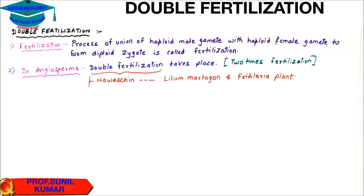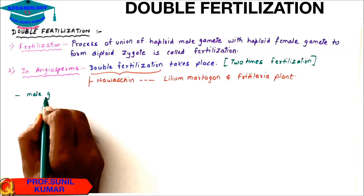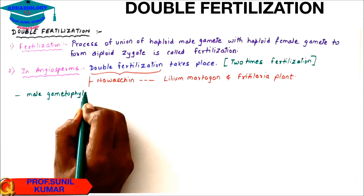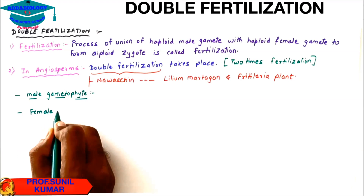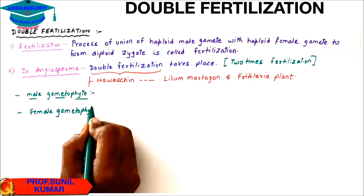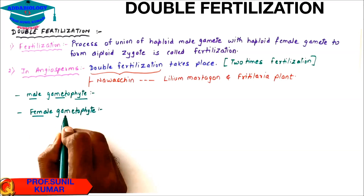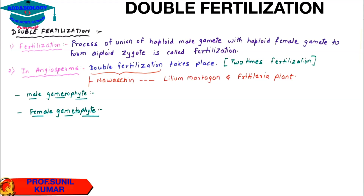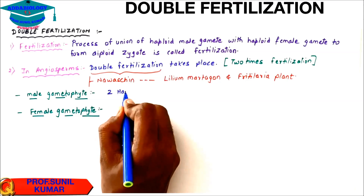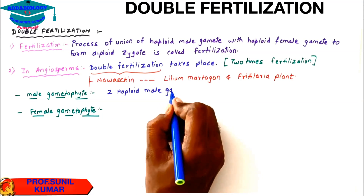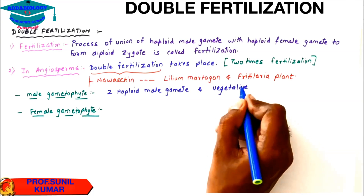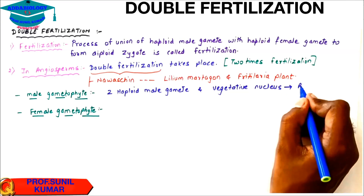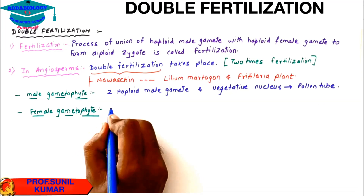First we need to understand the male gametophyte. In the male gametophyte there are two haploid male gametes and a vegetative nucleus. The role of the vegetative nucleus is to give rise to the pollen tube, and it can also be called the tube nucleus.